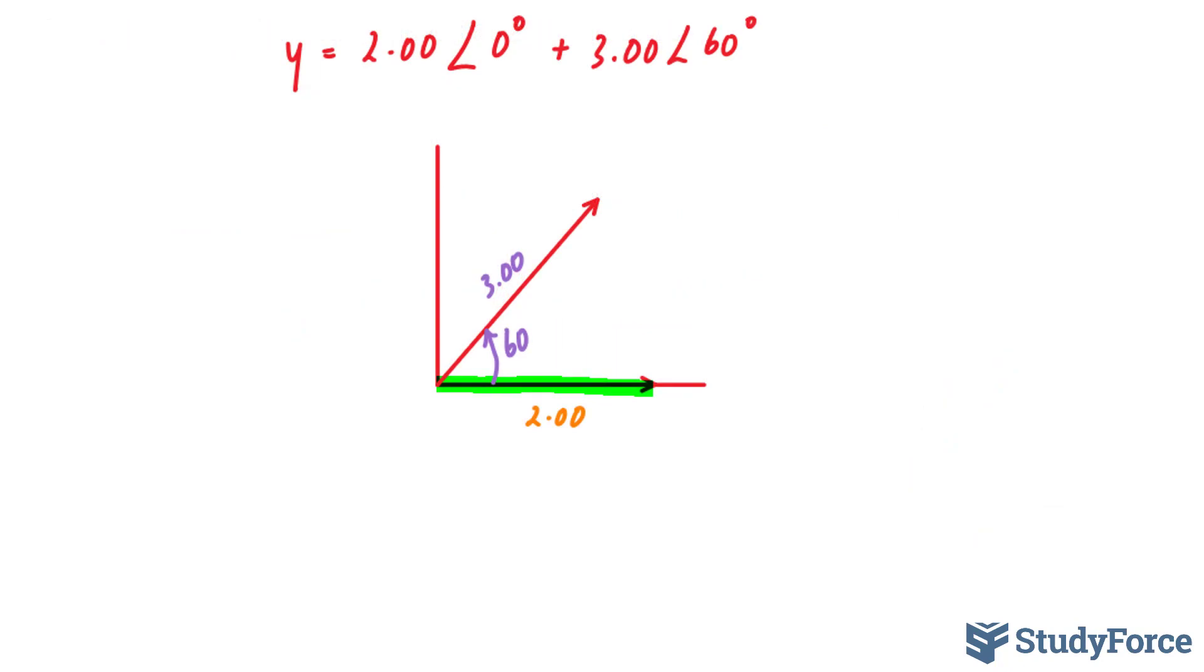I'll use the tail-to-tip method. I'll take this vector and bring it up here, and take this vector and put it over here. If this is at an angle of 60, so is this one. As a result, I can find the angle here, which is 120. This is called supplementary angles: 120 plus 60 gives us 180.